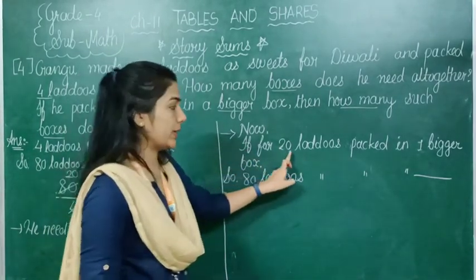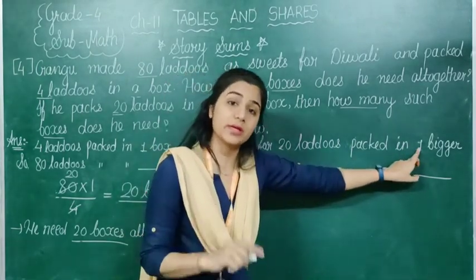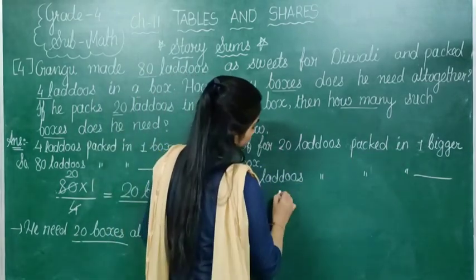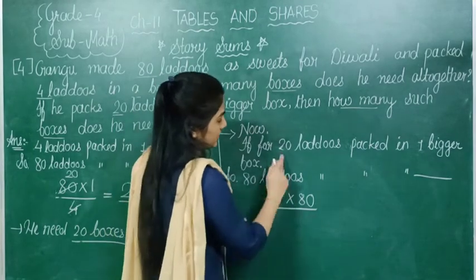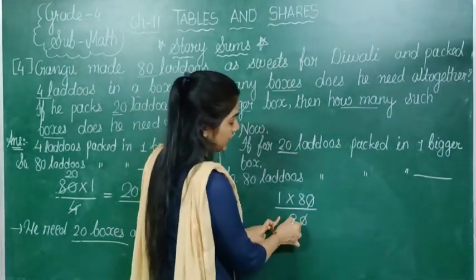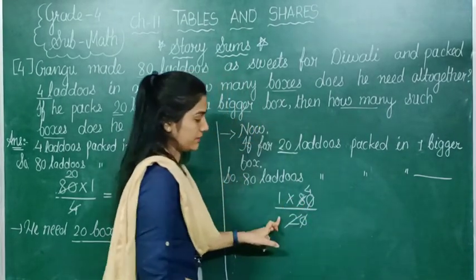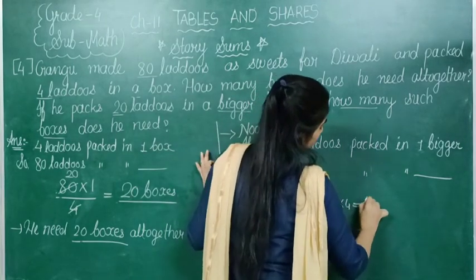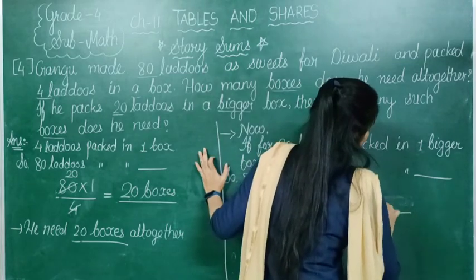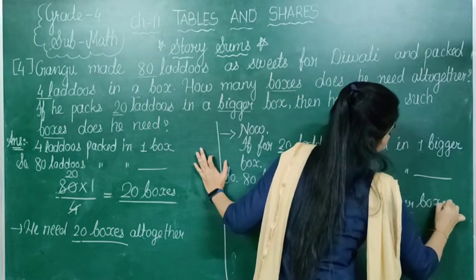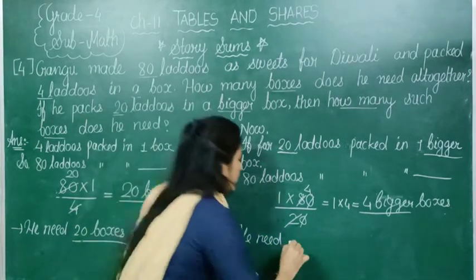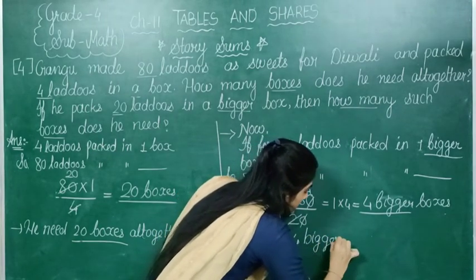We will do cross multiplication again. If for 20 laddus he packs in one bigger box, then for 80 laddus — 80 multiplied by 1 and we divide by 20. You can directly cut the zero from the backside. In the table of 2, when 8 is coming — 2 fours are 8 — so 1 multiplied by 4 gives 4 boxes. So we need 4 bigger boxes.